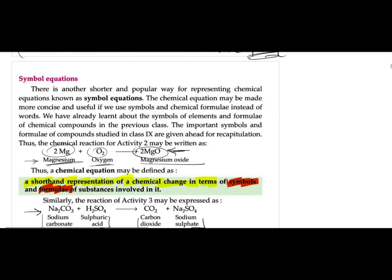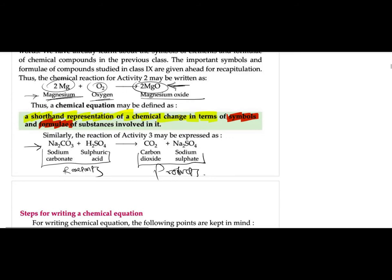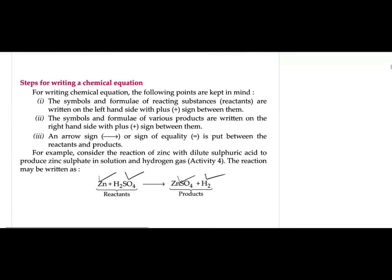Then we studied symbol equations. In a symbolic equation, we use the short forms or formulae of the compounds and elements involved in the chemical reaction — a shorthand representation of a chemical change in terms of symbols and formulae of substances involved. We studied a few examples.